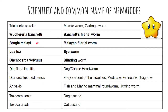Wuchereria bancrofti, Brugia malayi, Loa loa, and Onchocerca volvulus are the filarial worms. The main characters are Wuchereria bancrofti, otherwise known as Bancroft's filarial worm, and Brugia malayi, whose common name is the Malayan filarial worm. We will also discuss Loa loa, which is the eye worm, and Onchocerca volvulus, otherwise known as the blinding worm.